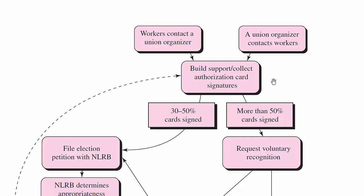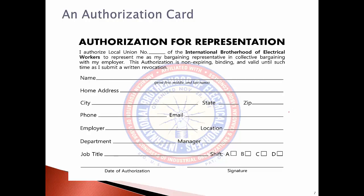If the workers are going through the process to generate a secret ballot, once the union has been contacted, the workers and the union attempt to build support by collecting signed authorization cards. For example, a card might read: 'I authorize Local Union [number] of the International Brotherhood of Electrical Workers to represent me.' The person would enter their personal information, sign the card, and submit it.